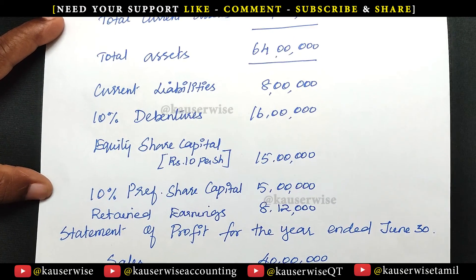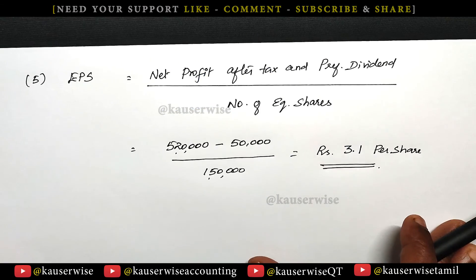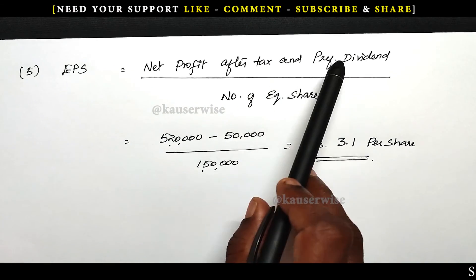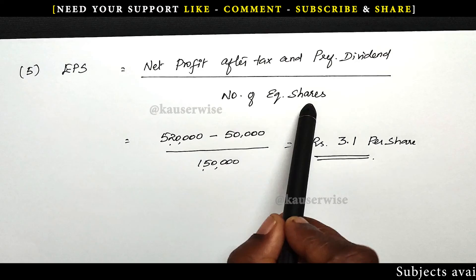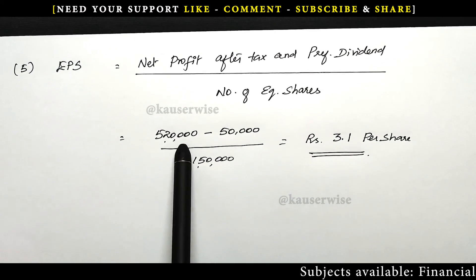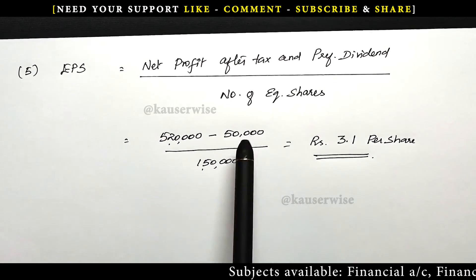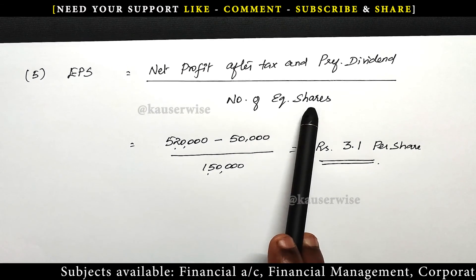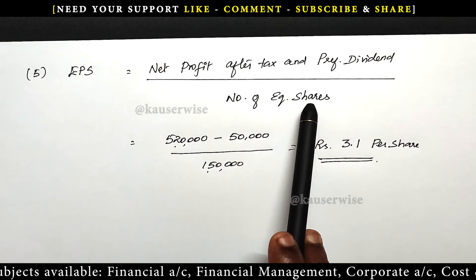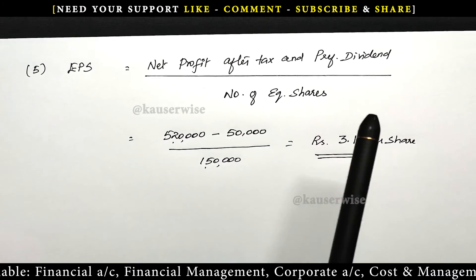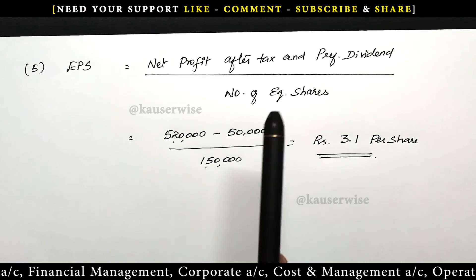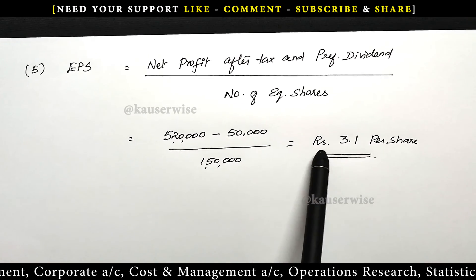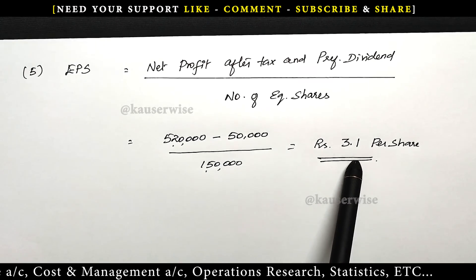Now apply the formula to find EPS. EPS equals net profit after tax and preferential dividend divided by number of equity shares. So 5,20,000 minus preferential dividend of 50,000 (that is 10% on 5,50,000), divided by 1,50,000 equity shares (15 lakhs divided by 10 rupees each). You will be getting rupees 3.1 per share. This is EPS, earning per share.